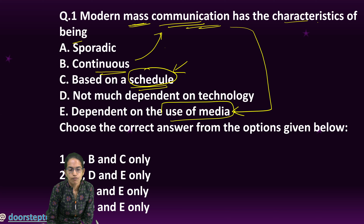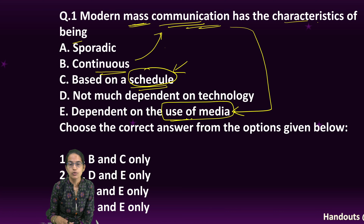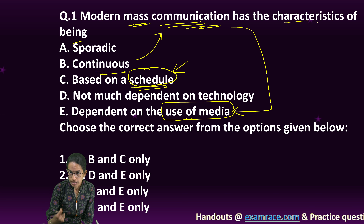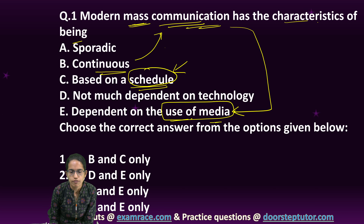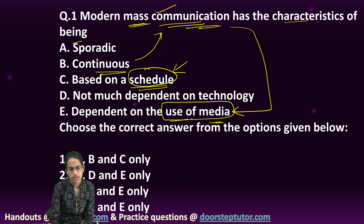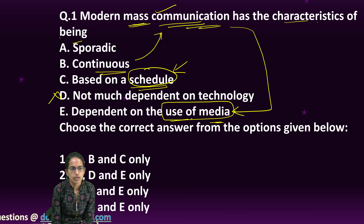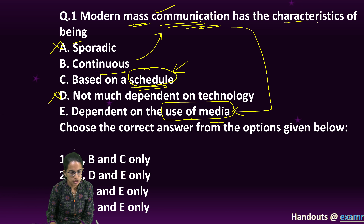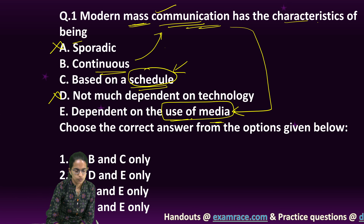Mass communication also depends on the use of media. For example, if someone is using only audio, it could be All India Radio. If someone is using television as well, it could be Doordarshan. Based on the usage of media, the type of mass communication varies. It is definitely dependent on technology and is not sporadic — it is definite, well-defined, and continuous. So B, C, and E are the correct answers.